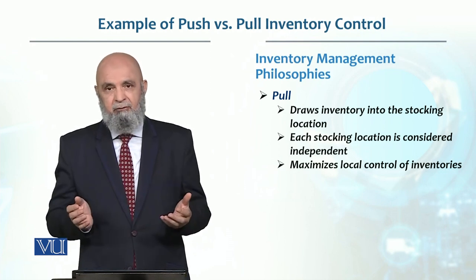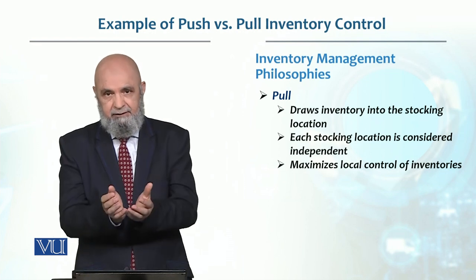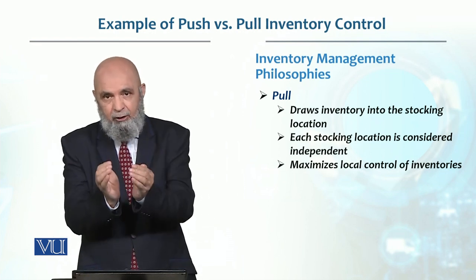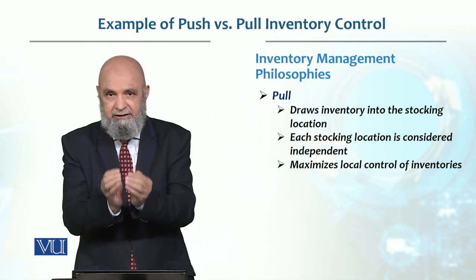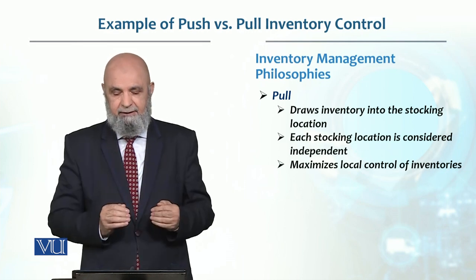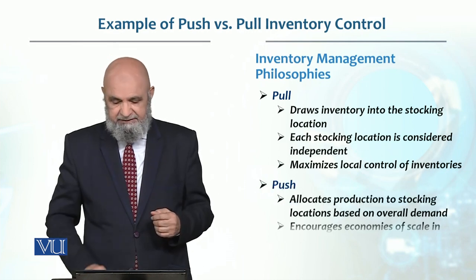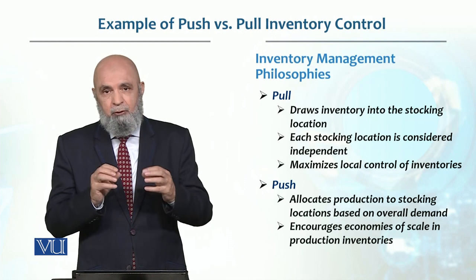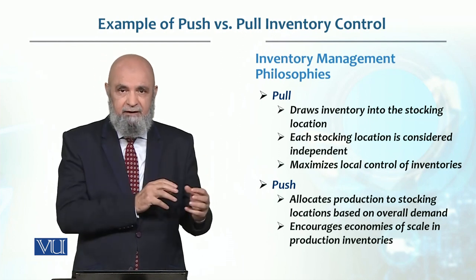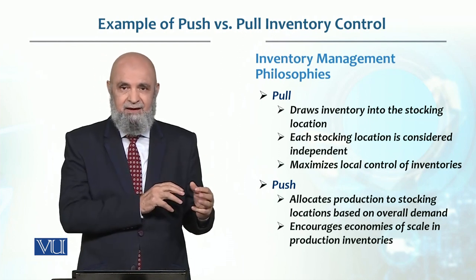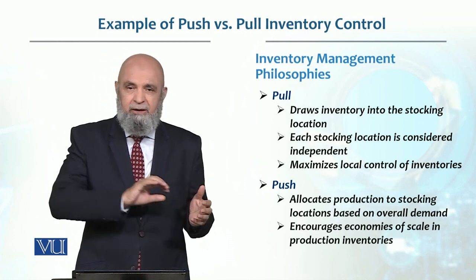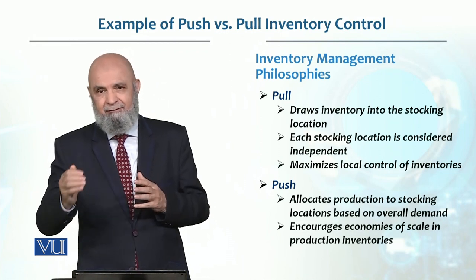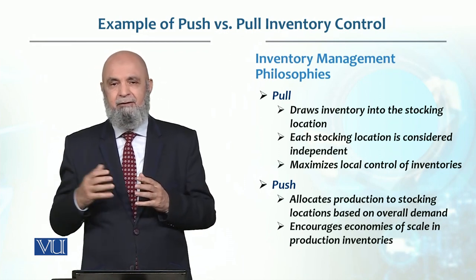Inventory control is better in the pull system because the warehouse or location itself is handling the orders. In the push system, the factory produces and allocates that amount to different locations.